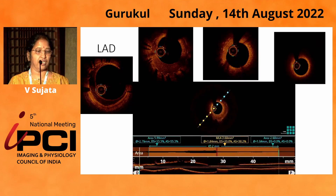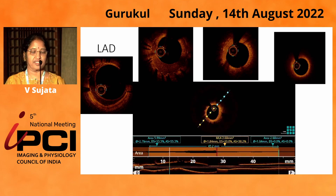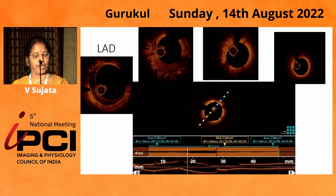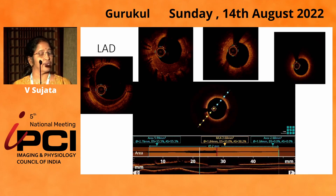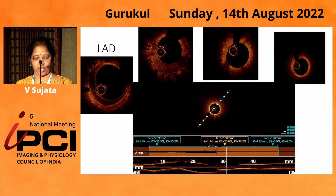So we did imaging. You can see there is a restenosis in the LAD. In the middle picture, there are two stent struts, and you can see there is intimal hyperplasia. In the rightmost picture, there is also a lipid plaque — you cannot see beyond the stent strut.